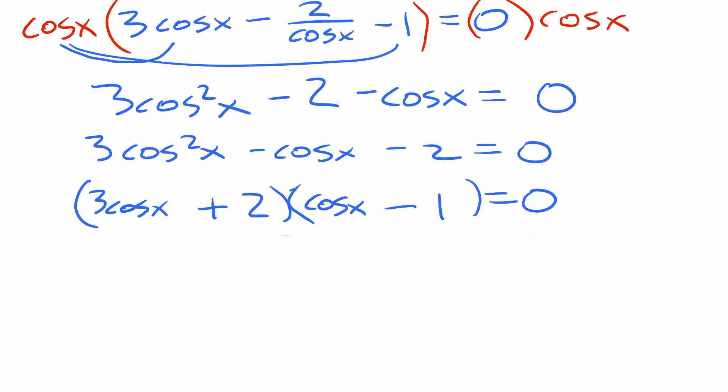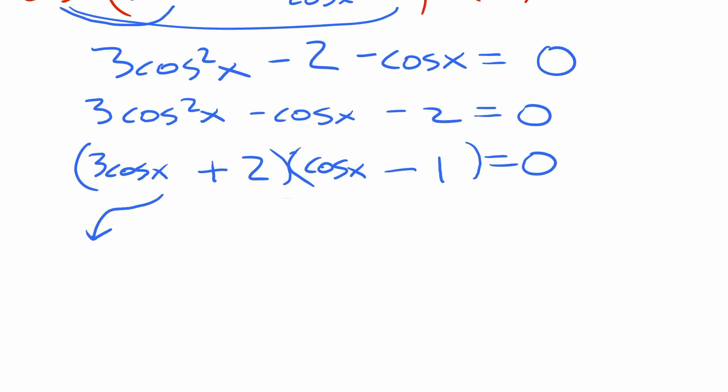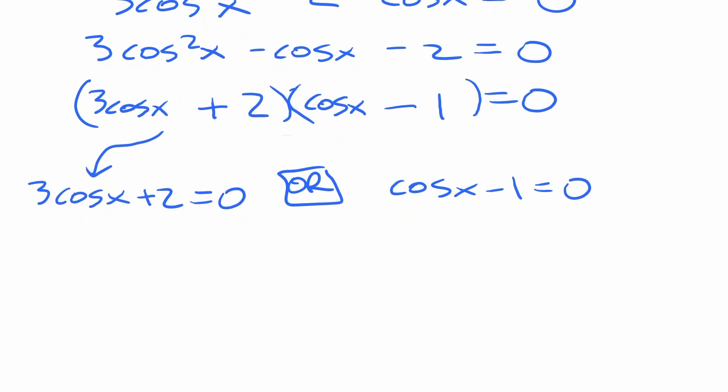So if we're proceeding from there, why that helps is now we can split it into two separate smaller equations. If you have this whole thing equal to zero, either this is zero or this is zero. So you write either 3 cos x plus 2 equals zero, or cos x minus 1 equals zero. And you can solve each of those two smaller equations separately. This one ends up being 3 cos x equals negative 2, or in other words, cos x equals negative 2 over 3. And the other one here just ends up being cos x equals 1.